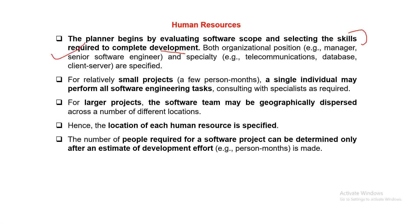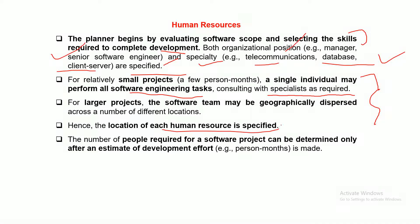You need to identify the skills required for this development — both organizational position such as manager, senior software engineer, and specialties like telecommunication, database, and client-server. You might need a variety of people with various skill sets. For relatively small projects, a single individual may perform all software engineering tasks, consulting with specialists as required. The number of people required for the software project can be determined only after an estimate of development effort.